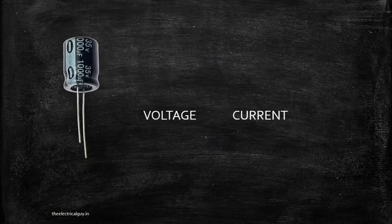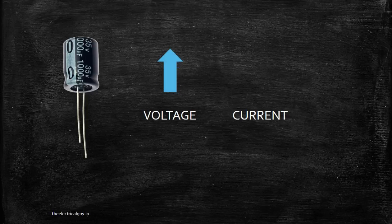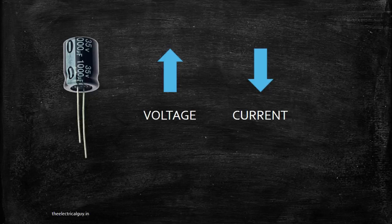A capacitor tries to keep the voltage constant by changing the current across it. Let's say the voltage across your capacitor has increased above the normal level. The capacitor will oppose this change in voltage by reducing the current — it will take current from the system. By Ohm's law, if current reduces, the voltage will also decrease back to normal.